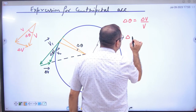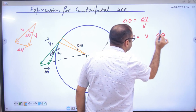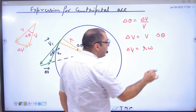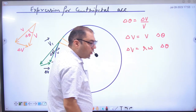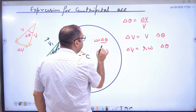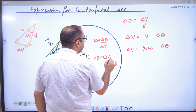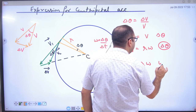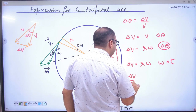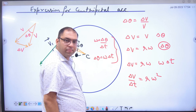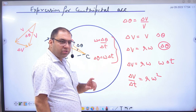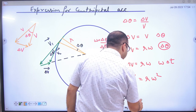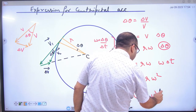So delta V equals V times delta theta. Now we know that V equals r times omega, so delta V equals r·omega times delta theta. And since omega equals delta theta divided by delta t, we substitute delta theta equals omega times delta t. Therefore delta V equals r times omega squared times delta t. So delta V divided by delta t — the velocity change towards the center divided by time — gives us centripetal acceleration.